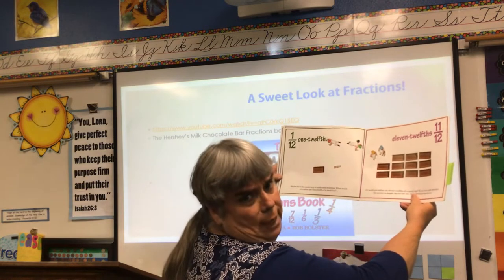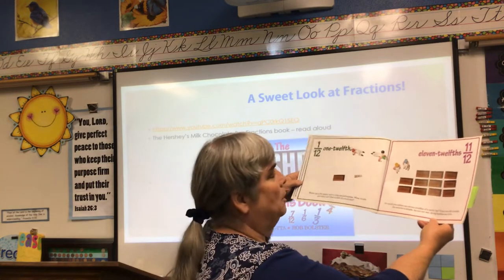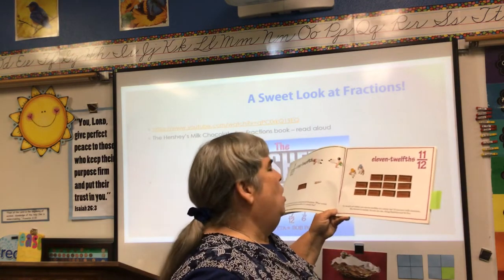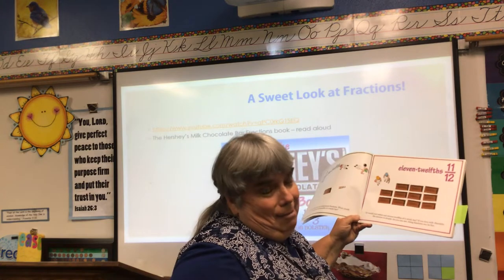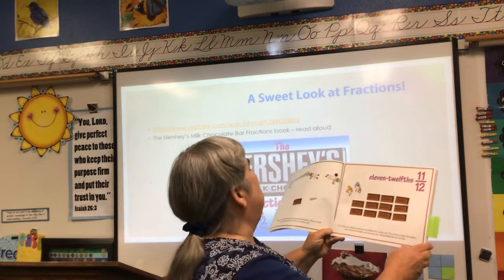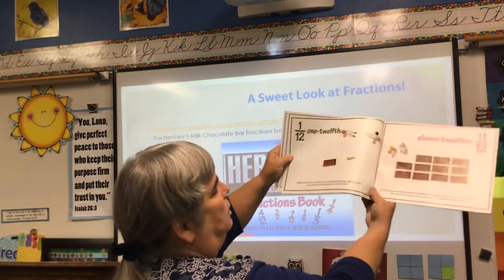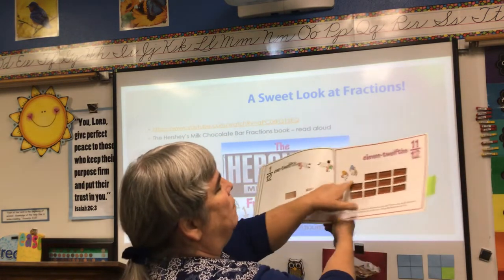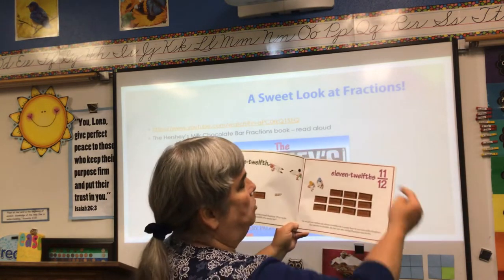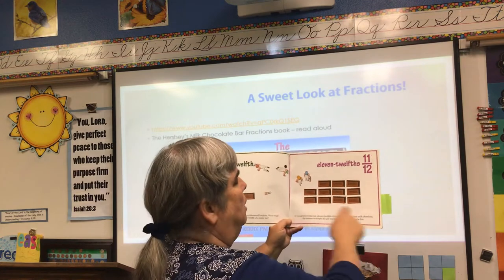Maybe this is the easiest way to understand fractions. What would you rather eat: 1 twelfth of a candy bar or 11 twelfths of a candy bar? If you love milk chocolate, the answer is simple. As you can see, doing fractions can be fun. This is a unit fraction, 1 twelfth — right here, that little piece of chocolate. There are 12 even sections, but we're only talking about one. On this page, what we have is 11 twelfths, because one of those is gone and there's 11 left.